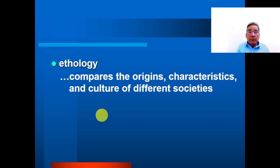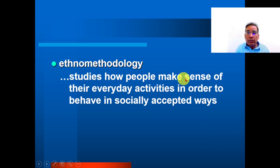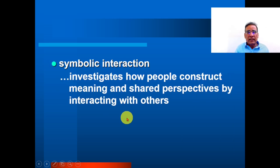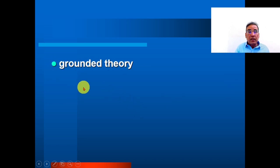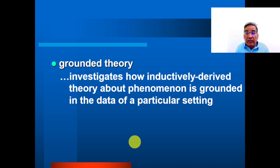Next, ethnology: compare the origin, characteristics, and culture of different societies — it comes from the word 'ethos.' Ethnomethodology: study how people make sense of their everyday activity in order to behave in a socially accepted way. Symbolic interaction: investigate how people construct meaning and share perspectives by interacting with others. Grounded theory: investigate how inductively derived theory about phenomena is grounded in the data of a particular setting.